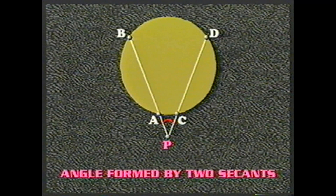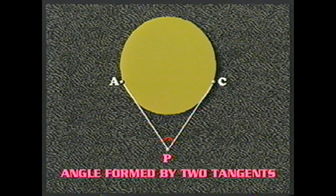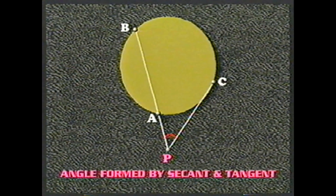When two chords intersect in the interior of a circle, the measure of the angle formed equals one half of the sum of the measures of the two intercepted arcs. For example, given arc AB of 60 degrees and arc CD of 80 degrees, angles CED and AEB are vertical angles and therefore equal. Their measure is ½ × (60 + 80) = ½ × 140 = 70 degrees.